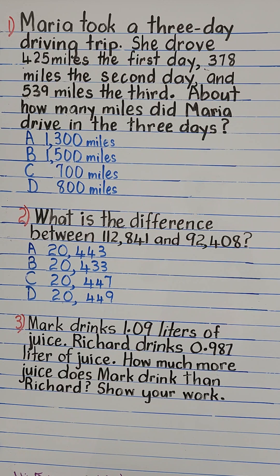We might have to read it more than once to make sure we understand our problem. Then after reading and understanding our problem, we're going to go ahead and underline the information that we need to solve the problem. Then we're going to identify what we are required to do, because that will let us know what operation to perform.